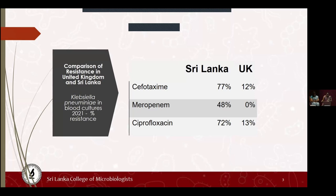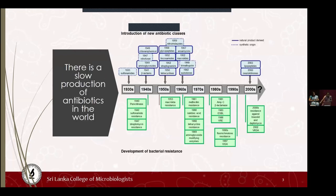Our blood culture resistance rates are very high. Almost all our antimicrobials, including our last resort antimicrobials, are now resistant. Comparing with developed countries, we are in a very bad situation. This is a comparison of resistance in the United Kingdom and Sri Lanka for Klebsiella pneumoniae in blood cultures in 2021. The resistance rate of meropenem in the UK is zero. Our rate is 48%.